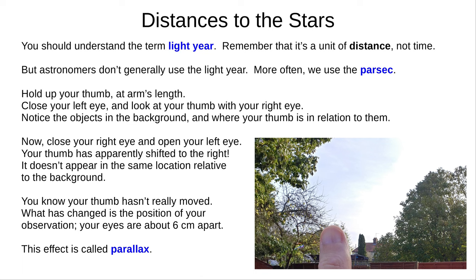Hold your thumb up at arm's length. Close your left eye and look at your thumb with your right eye. Notice the objects behind and around your thumb. Now, close your right eye and open your left eye. Your thumb has shifted to the right. It's in a different position relative to the background objects. Of course your thumb hasn't really moved, but the position of your observation has, since your eyes are about 6 centimetres apart. This effect is called parallax.